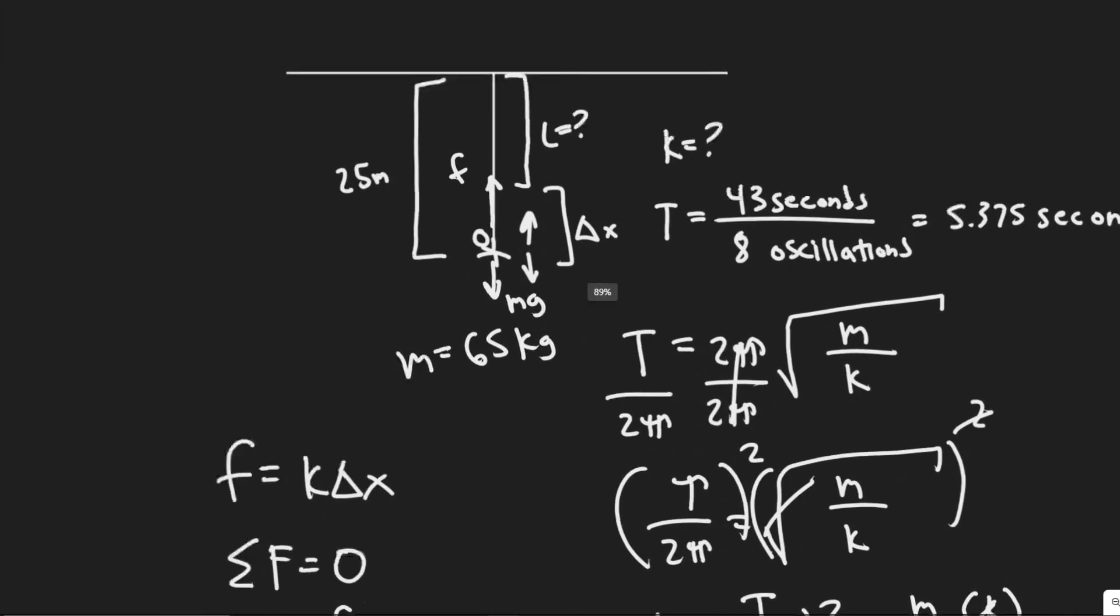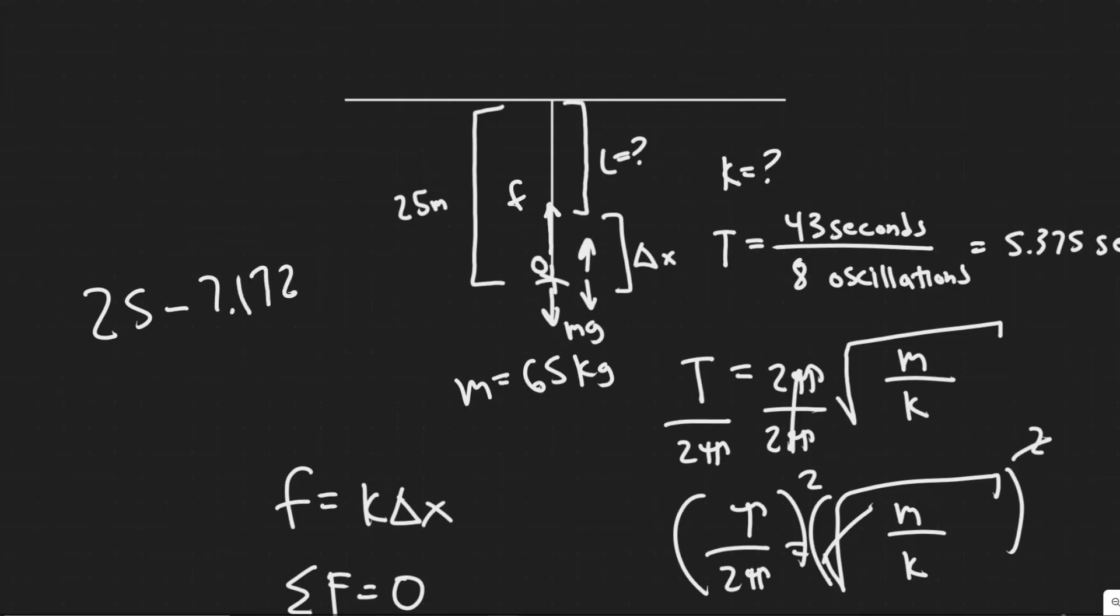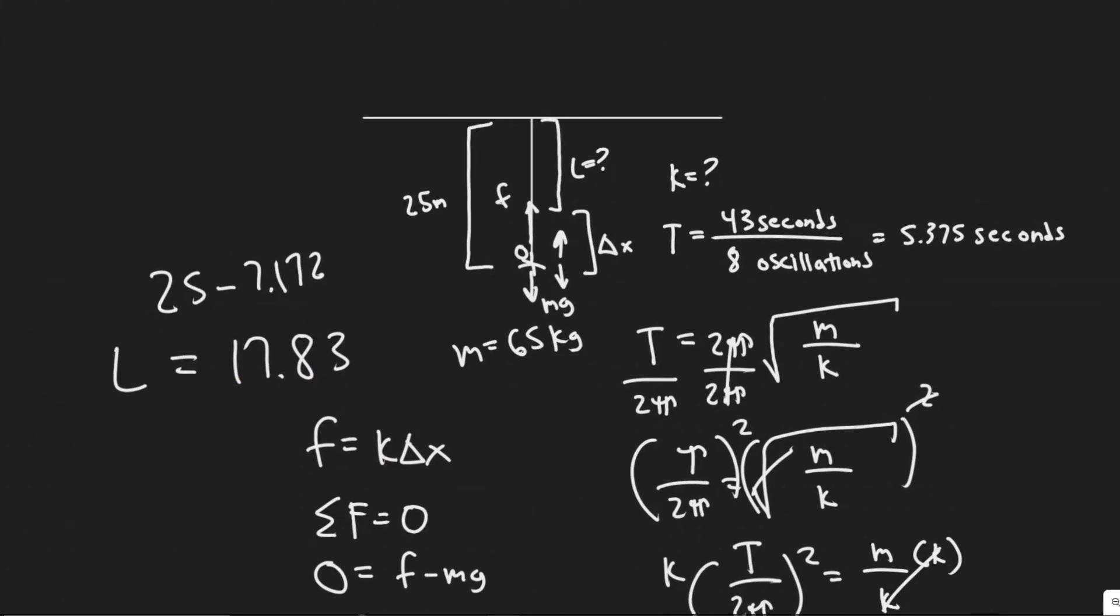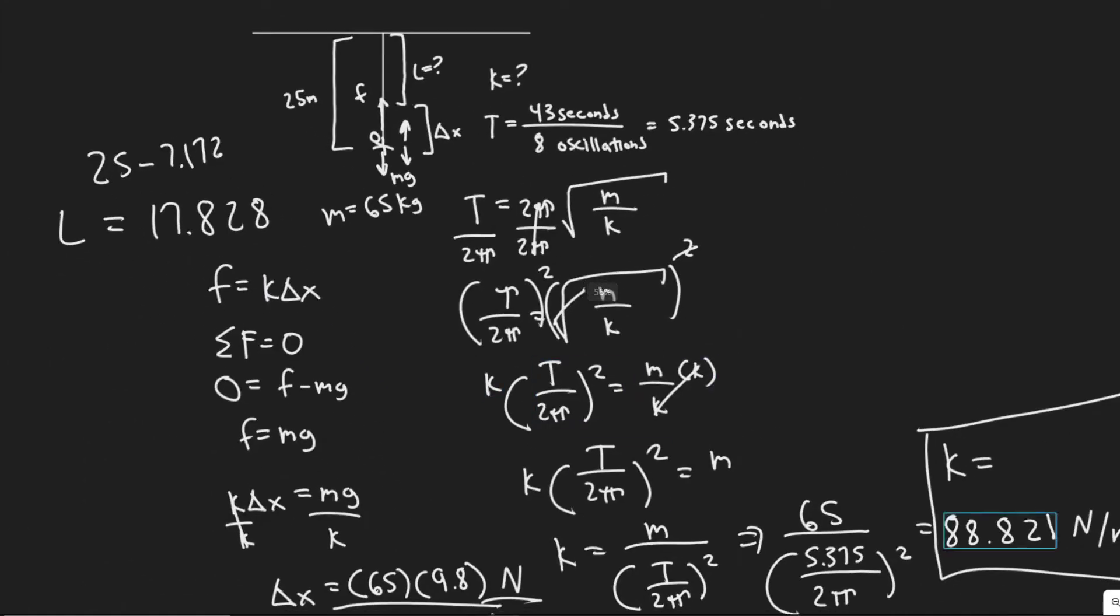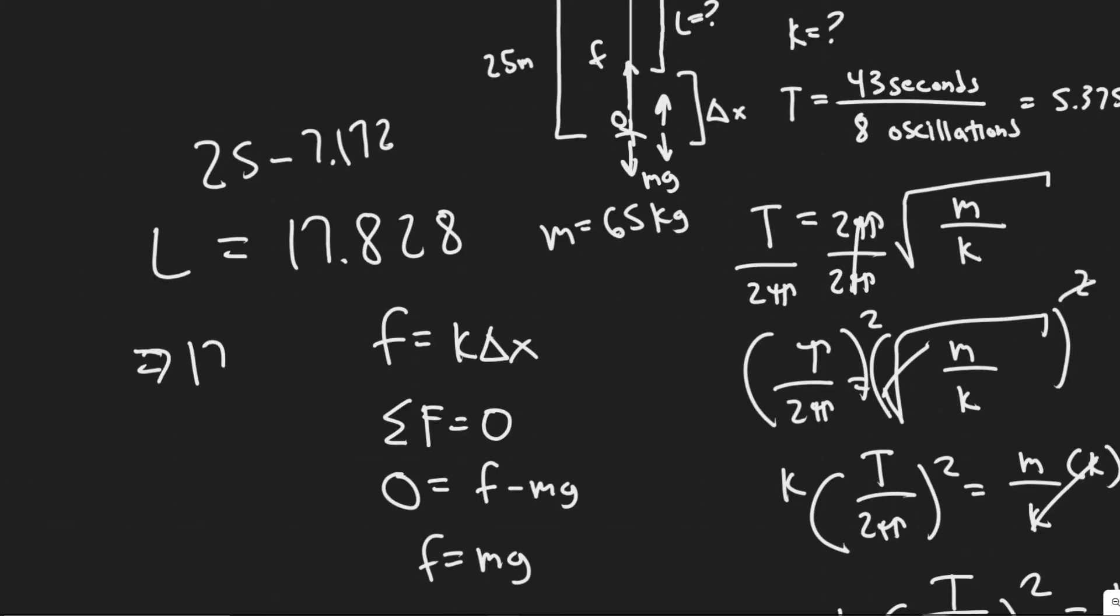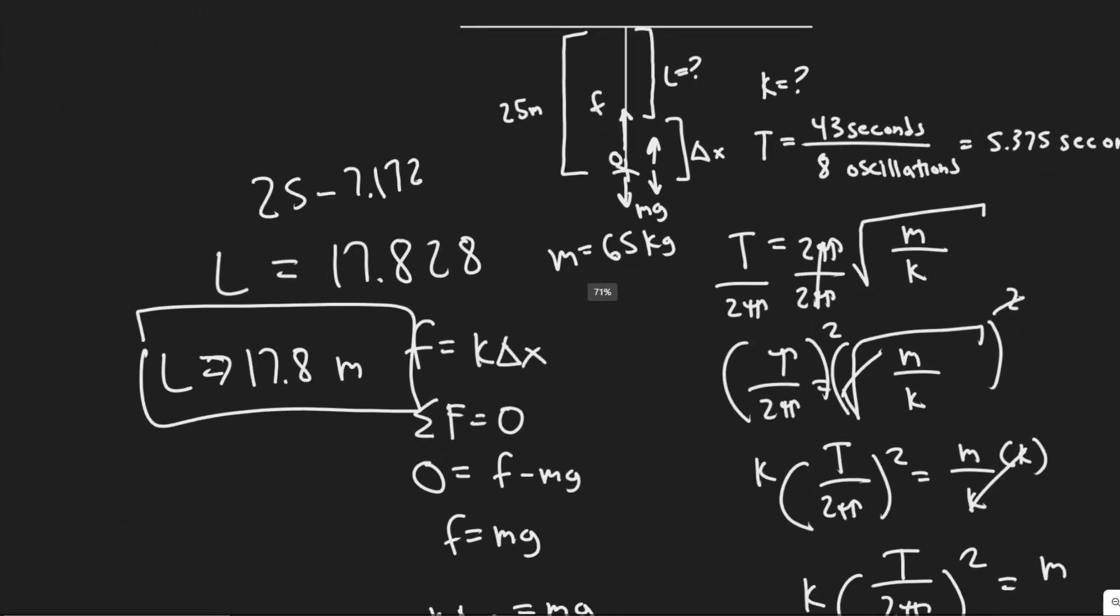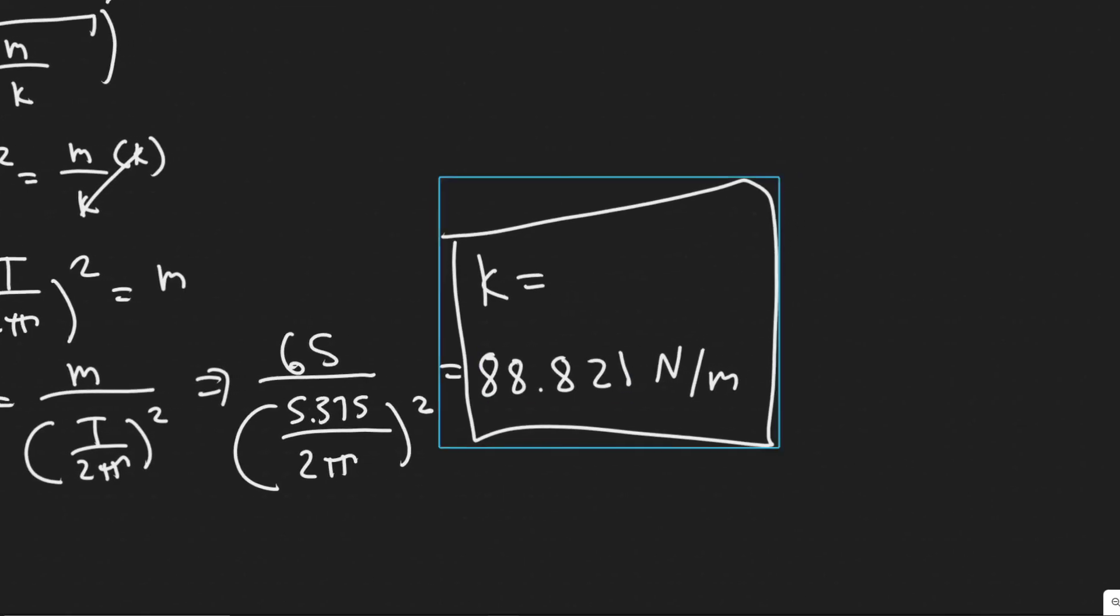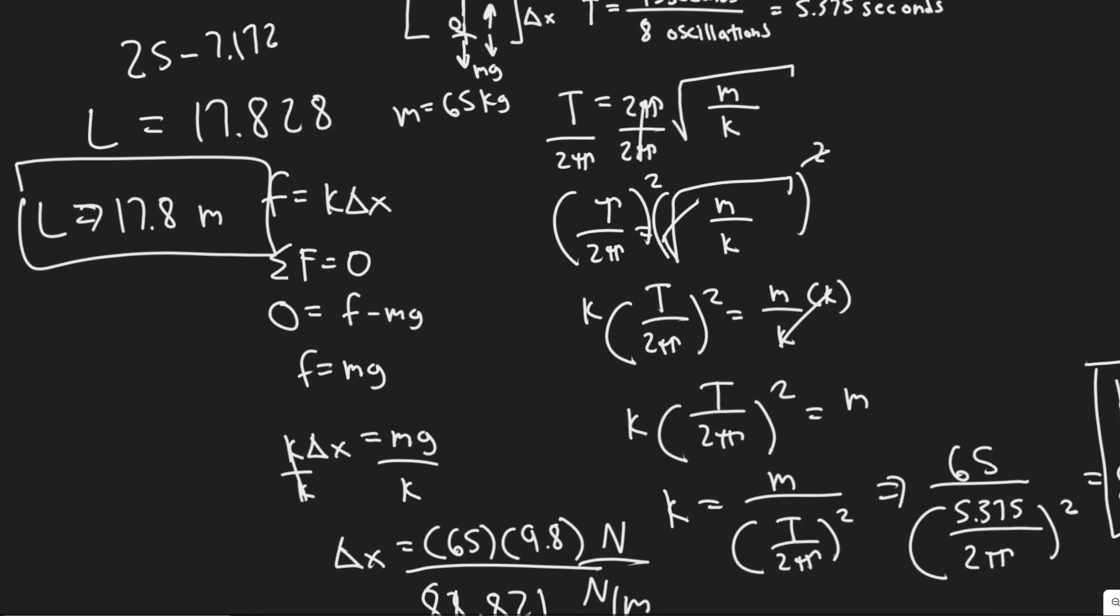We want to do 25 minus that. That'll give us the unstretched length. So 25 minus 7.172. Let's see what that gives us. That'll give us an unstretched length value L of 17.828, but I'm going to round to 17.8. Keep in mind, I did round a bit here with this value. So let's actually just say 17.8. So L, the unstretched length, is 17.8 meters. So this will be your answer for the second part. Your first part, you can round to 88.8 however you'd like. So 88.8 newtons per meter, and then 17.8 meters. Those are going to be your answers here.